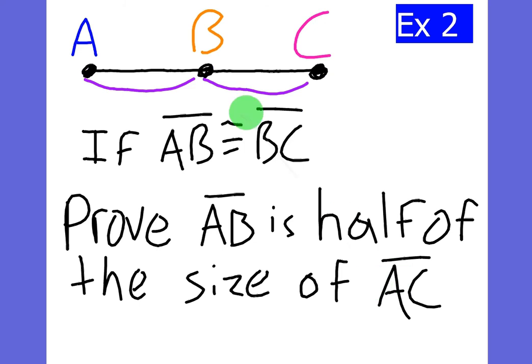Okay, we're going to look at another proof. This one's going to be actually easier, I think, than example one. So here's our diagram. We just have three points this time instead of five. It says, if AB is congruent to BC, so these two are the same, prove that AB is half the size of AC.